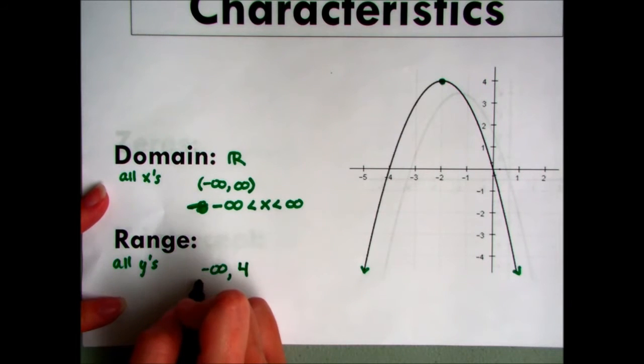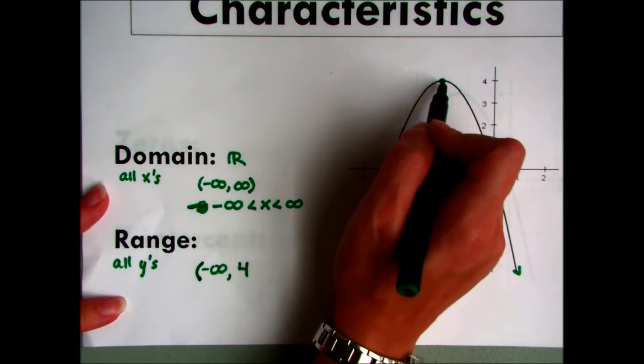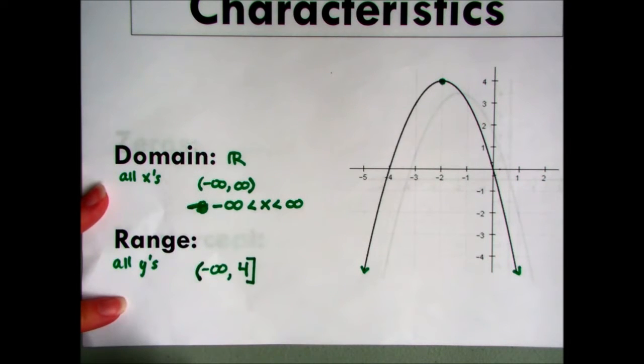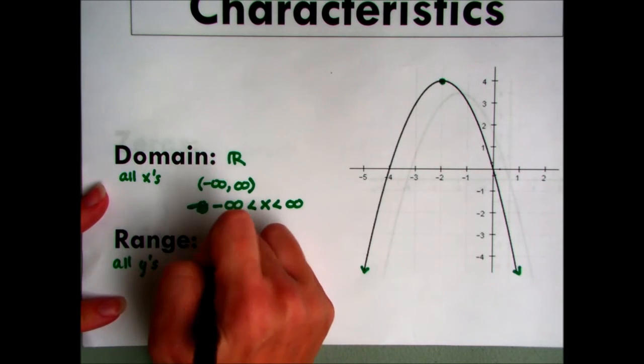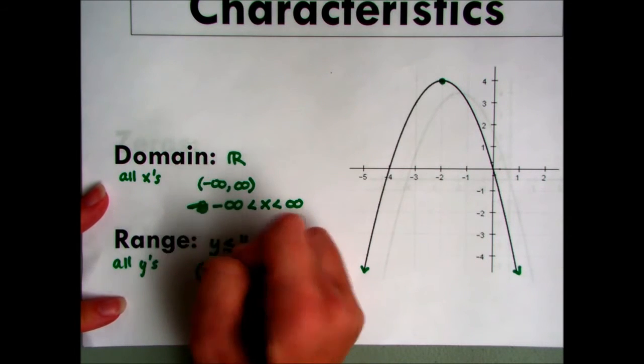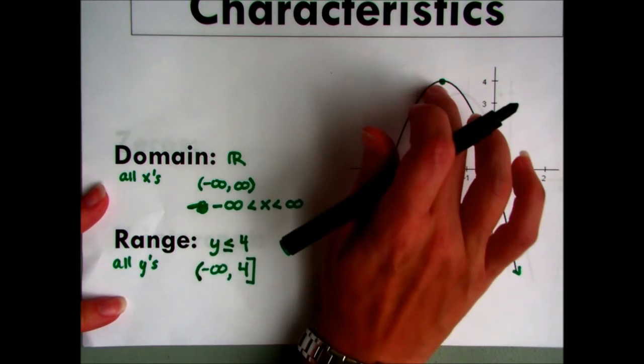So now look at this. It continues on forever, which means we need to have a curved bracket right here. However, it can stop, and it can actually hit the 4. It can go up as high as 4, which means we need a square bracket here. So our y, as long as it's less than or it can equal the 4, can be any value. So y is either smaller than or it can equal the 4.